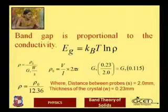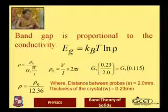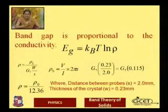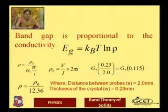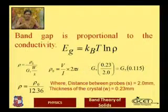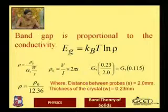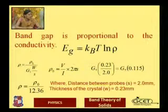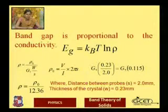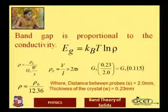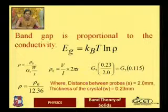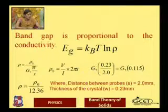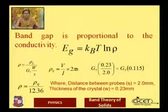The actual resistivity of a conducting material is found with a correction factor, which is a function of w (width of the specimen) and s (distance between probes). Using the G7 function, if w = 0.23 mm and s = 2.0 mm, the G7 function has a value of 12.37. So the actual ρ = ρ₀/12.37, where ρ₀ = (V/I)·2πs.